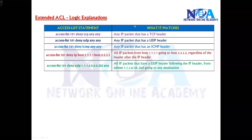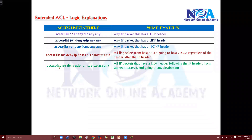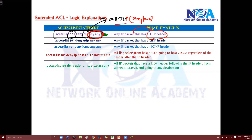We'll look at logical explanations of some examples to understand ACLs better. When you see 'access list 101', it means it's an extended ACL. 'Deny TCP any any' means it's going to match all TCP protocols, because no specific TCP service is defined — any source to any destination. All TCP header packets will be matched from any source to any destination.